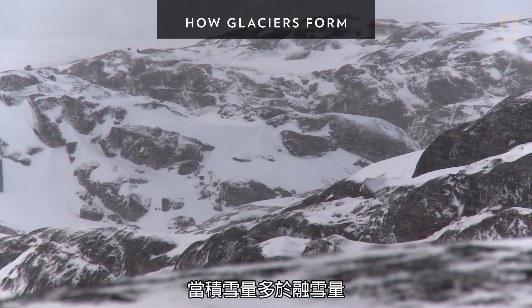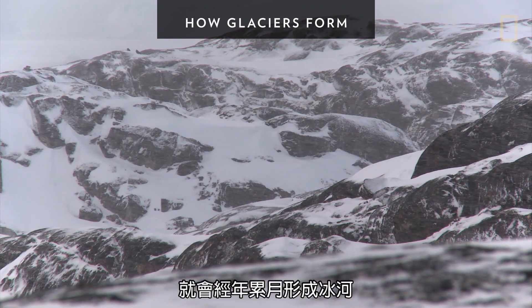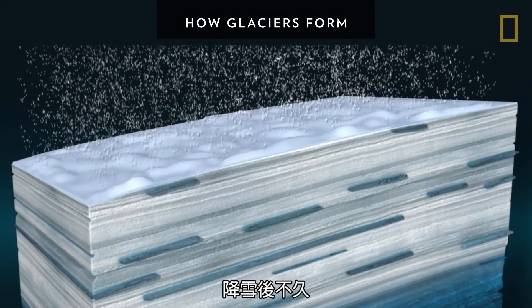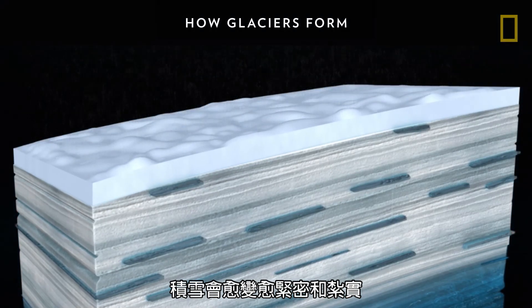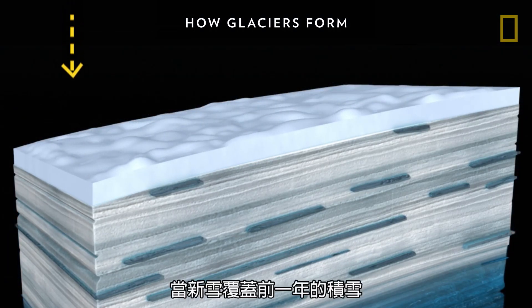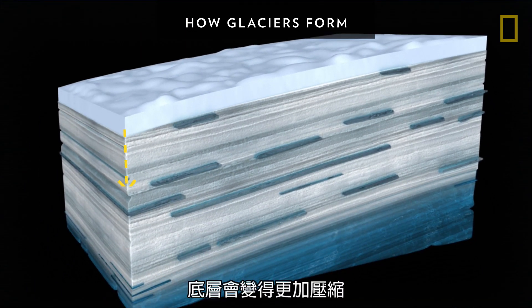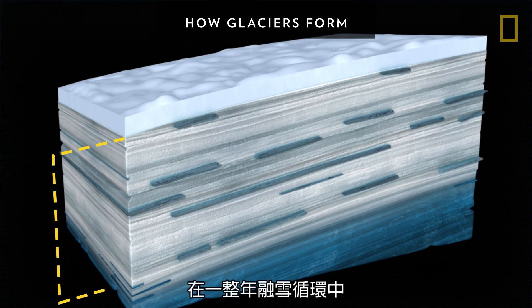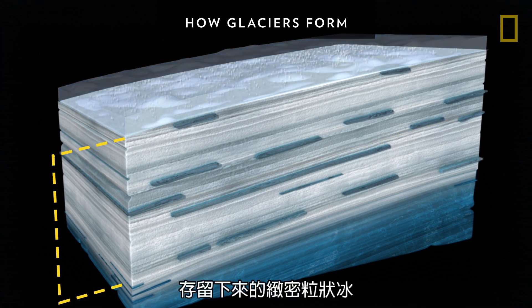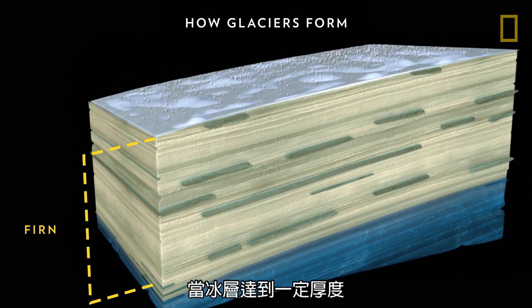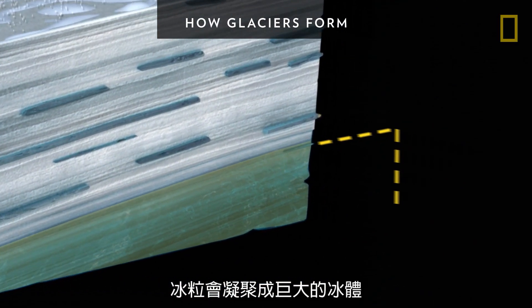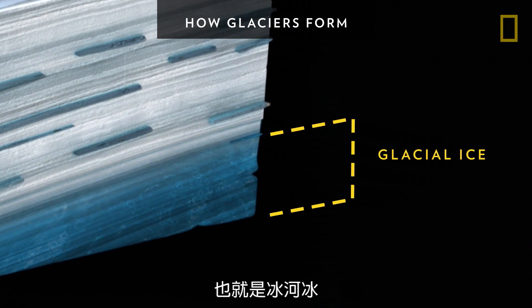Glaciers can form over years when more snow piles up than melts. Soon after falling, the snow begins to become denser and more tightly packed. When new snow falls and buries the previous year's snow, the bottom layer becomes even more compressed. The dense, grainy ice that has survived one year's melt cycle is called firn. When the ice grows thick enough, the firn grains fuse into a huge mass called glacial ice.